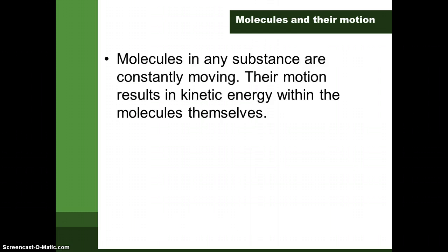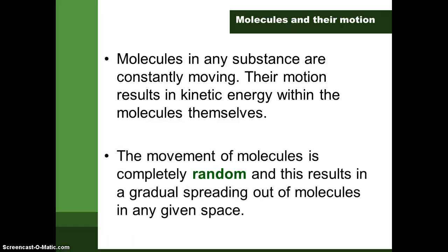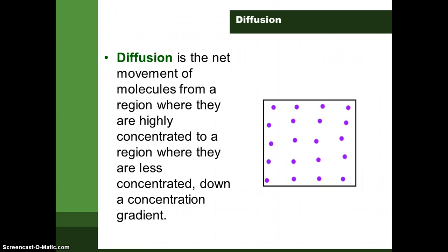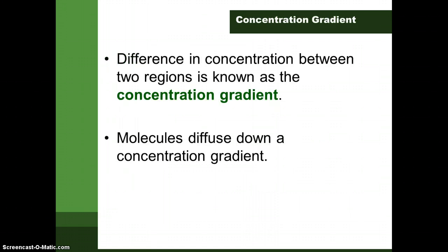Molecules, as we know, are in constant motion, and the motion is random. The energy required comes from the molecules themselves — their kinetic energy. Diffusion is defined as the net movement of molecules from a region of higher concentration to a region of lower concentration, down a concentration gradient. A concentration gradient exists between any two regions that have two different concentrations, and molecules diffuse down a concentration gradient.